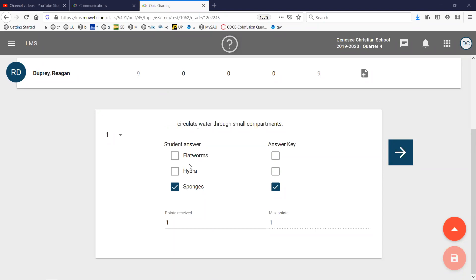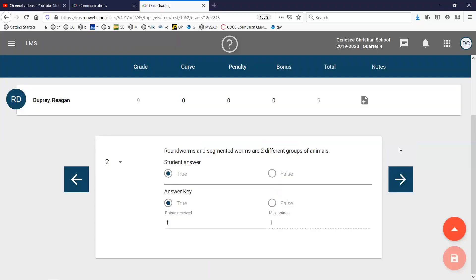The flatworms basically eat through their mouth, as do the hydra with tentacles that sweep things in. Roundworms and segmented worms are two different groups of animals. That is correct.